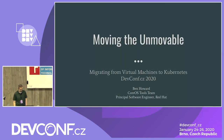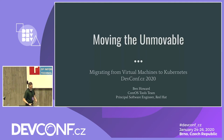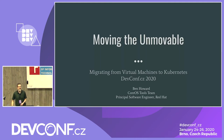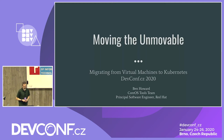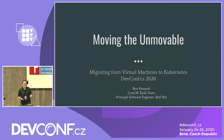My name is Ben Howard and I'm on the CoreOS tools team. Today I'm going to be talking about moving the unmovable. To introduce what I mean by that: in 2019, the Red Hat CoreOS team undertook a massive lift of moving our build pipeline from virtual machines into a Kubernetes/OpenShift environment. It was a monumental effort that involved a lot of people across at least four teams.